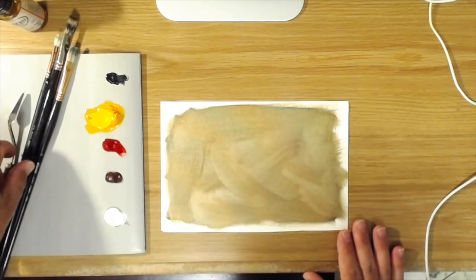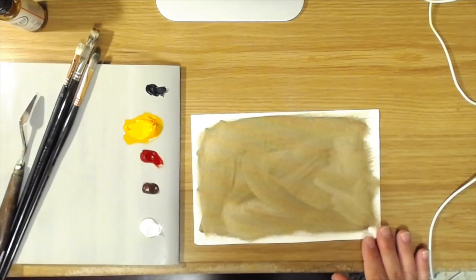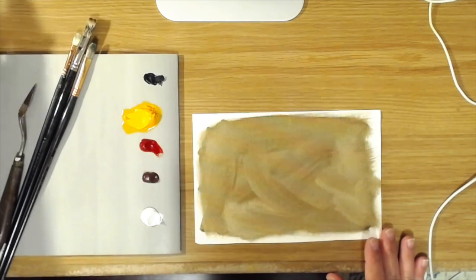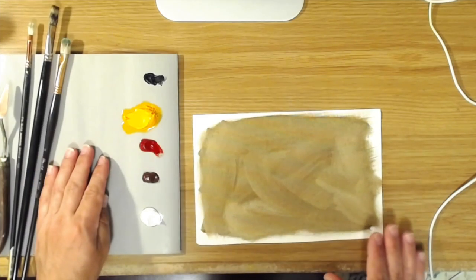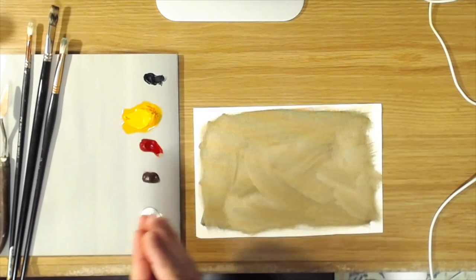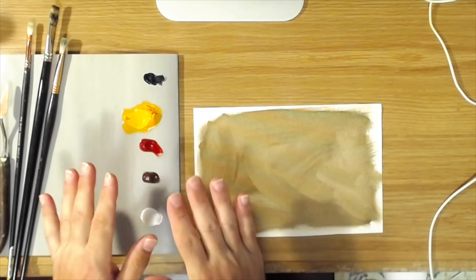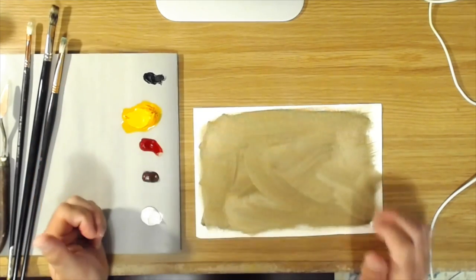The first method I'm going to show you is the a la prima method. Now the colors that I'm using today are a little bit different from the ones I normally use on my palette but these are extra that I had floating around. The reason I'm using these is I want to use the same colors for both demonstrations, and the glazing demonstration which I'll do second requires more transparent colors.